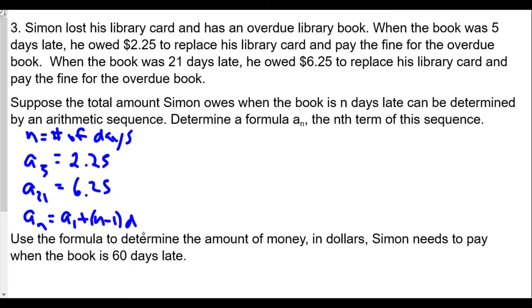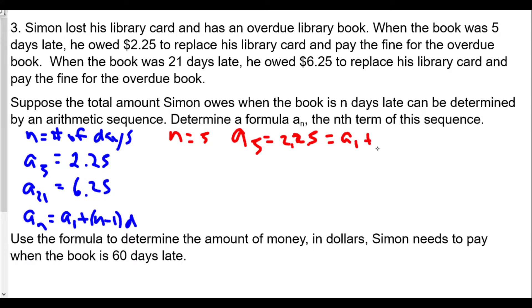We know that when n equals five, a of five equals $2.25, and that equals a1 plus five minus one times d. And for a of 21, we have $6.25 equals a1 plus 21 minus 1 times d.